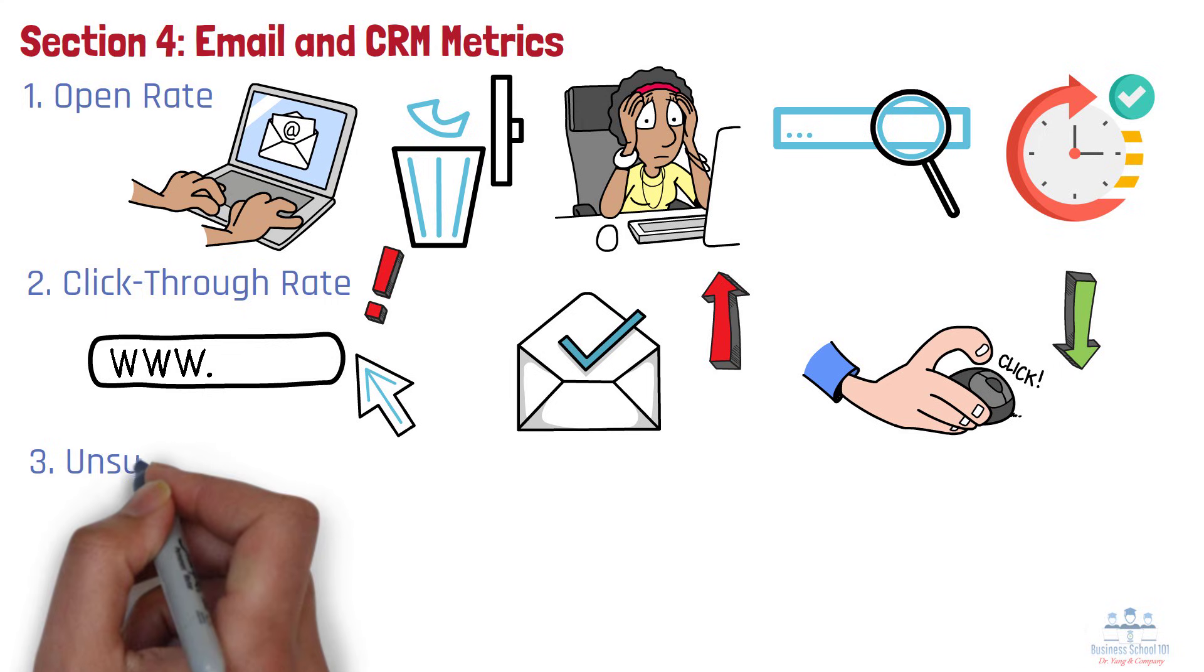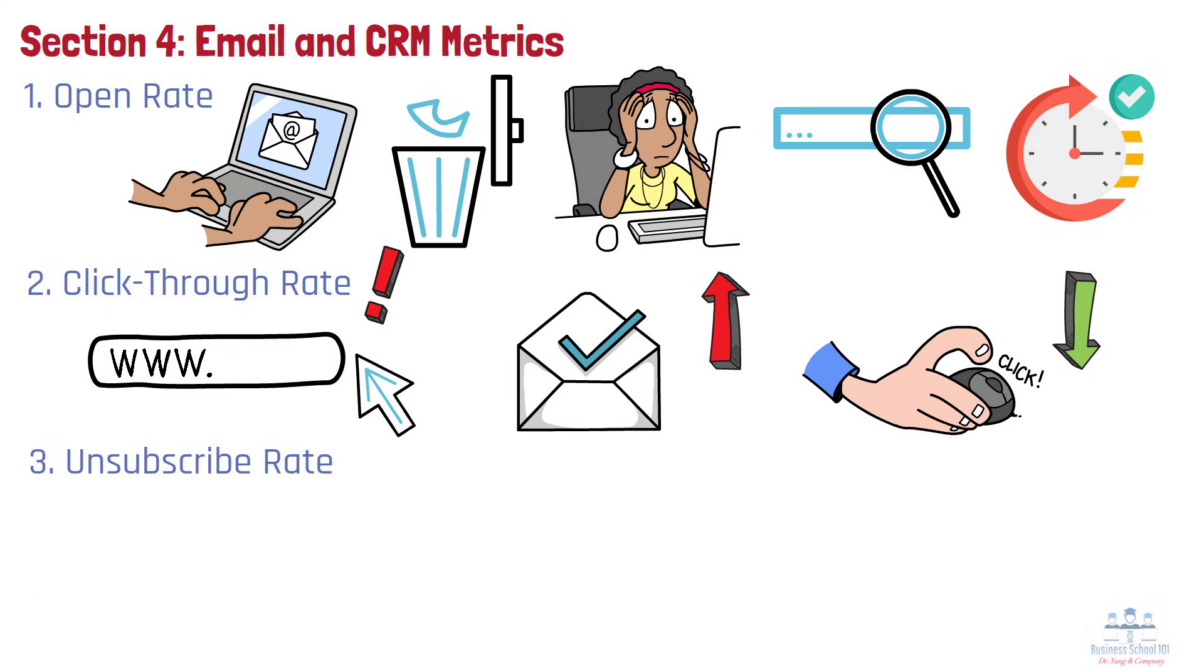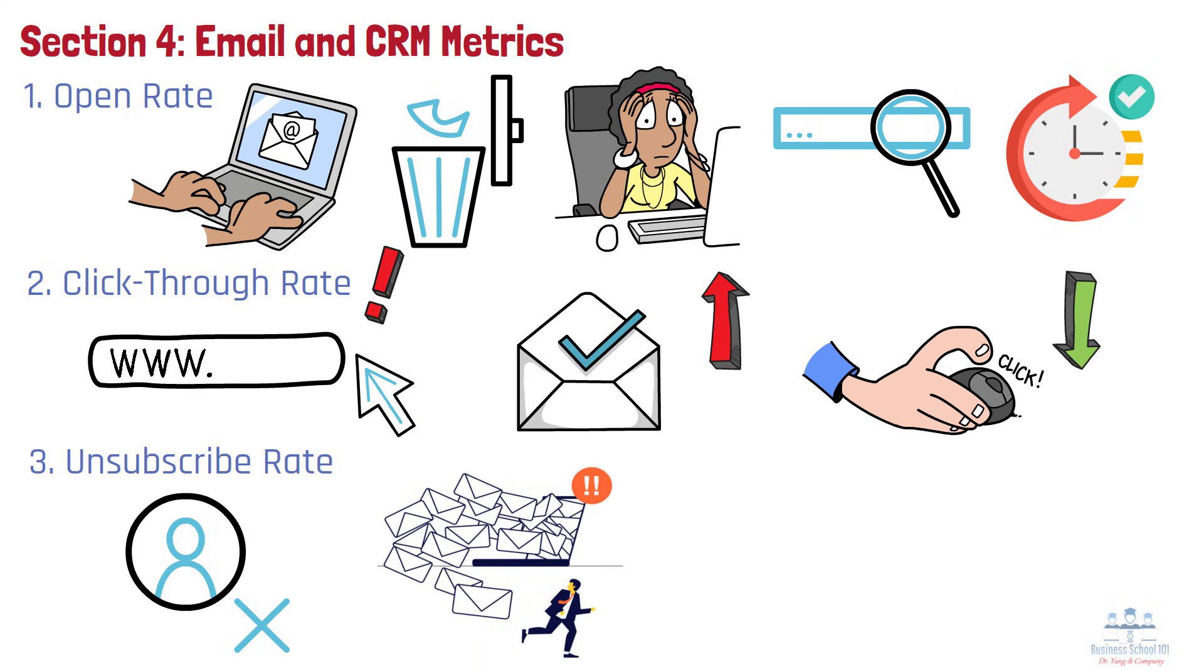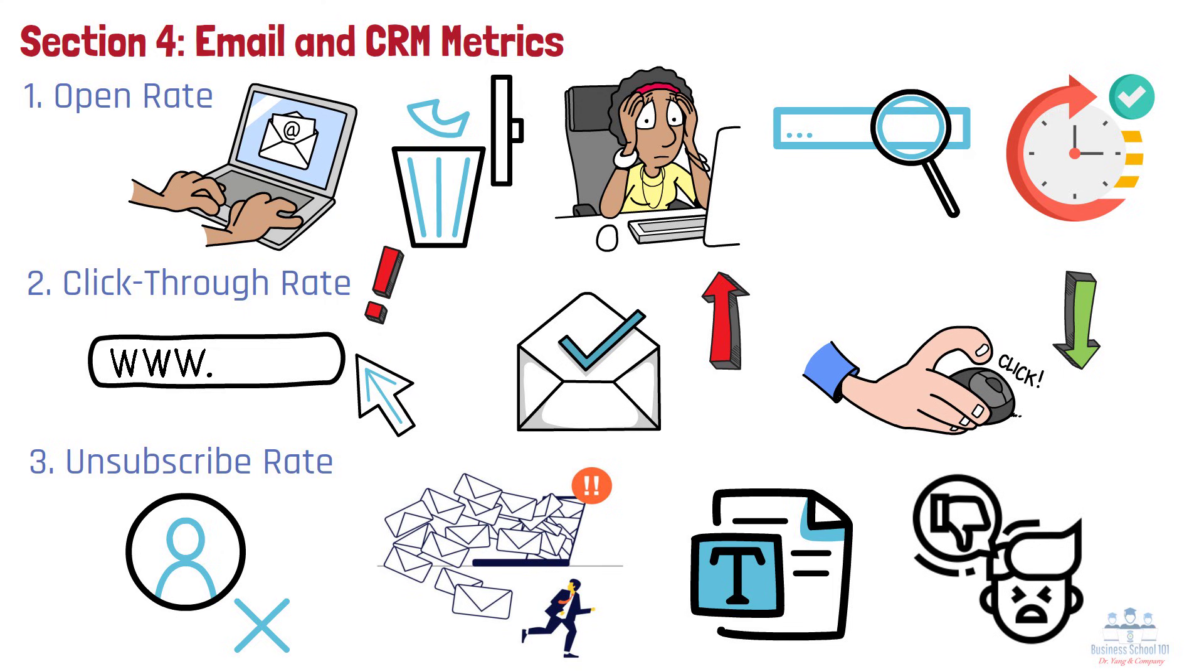Number 3. Unsubscribe Rate. Unsubscribe rate tells you the percentage of people who opted out of your mailing list after receiving an email. A rising unsubscribe rate could indicate that you're emailing too frequently or that your content isn't aligned with your audience's expectations. Managing this helps maintain a healthy, engaged list.